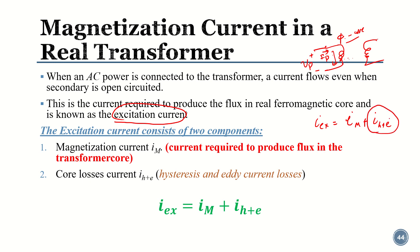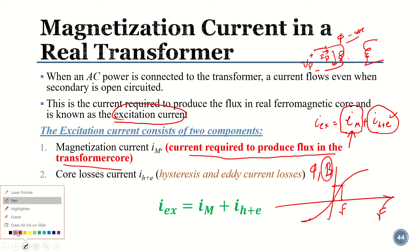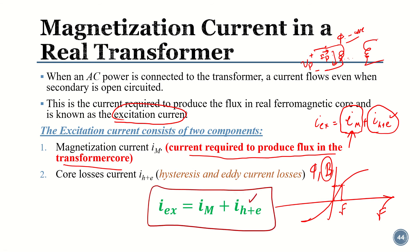The two components of excitation current are: first, the magnetization current, which is the current required to produce flux in the transformer core; and second, the hysteresis and eddy current losses current. We learned earlier that applying magnetomotive force produces magnetic flux density following a hysteresis loop, and from that graph we can calculate the flux.